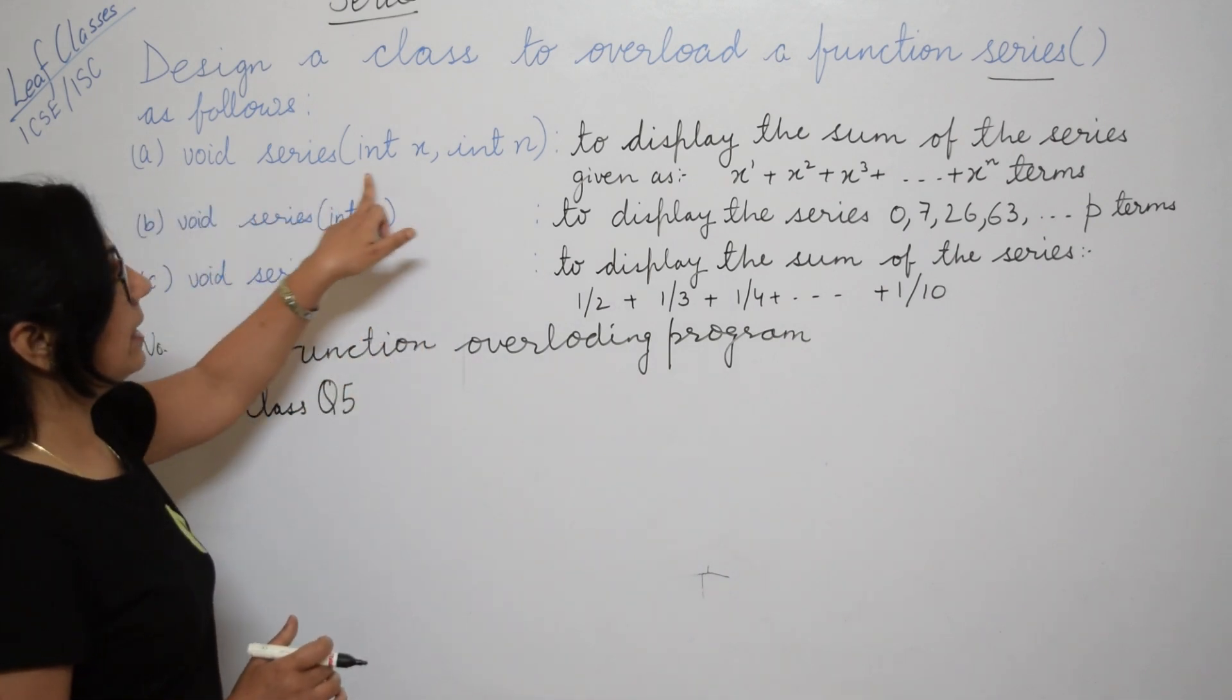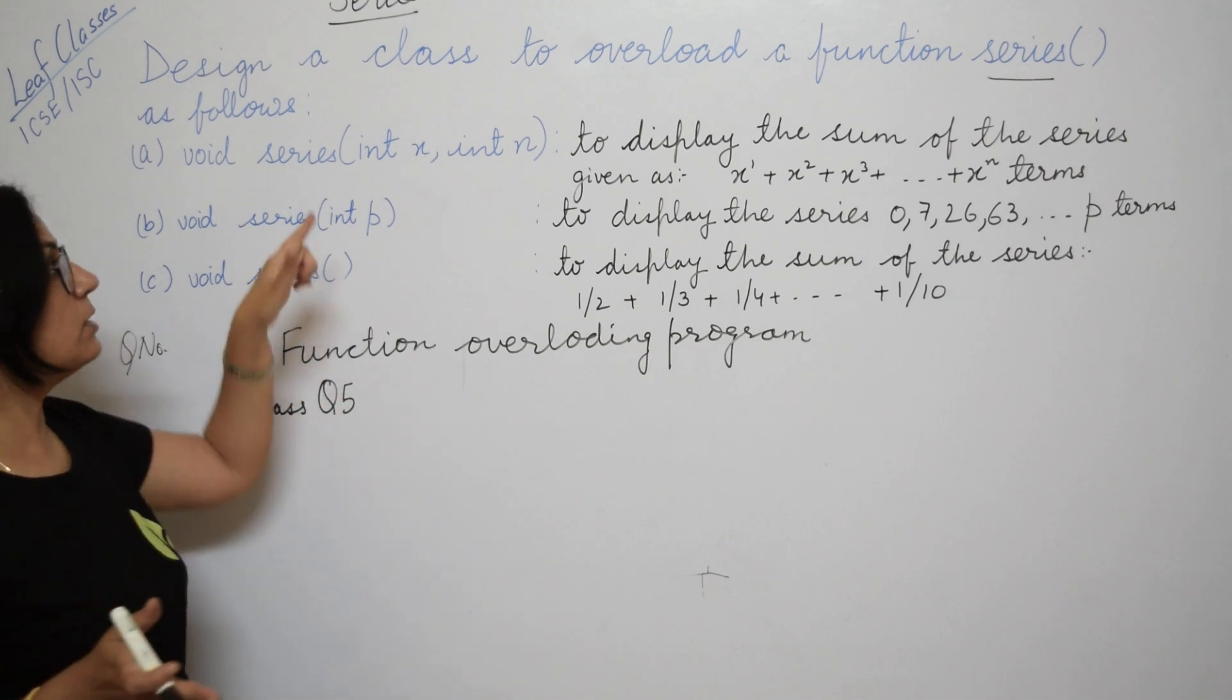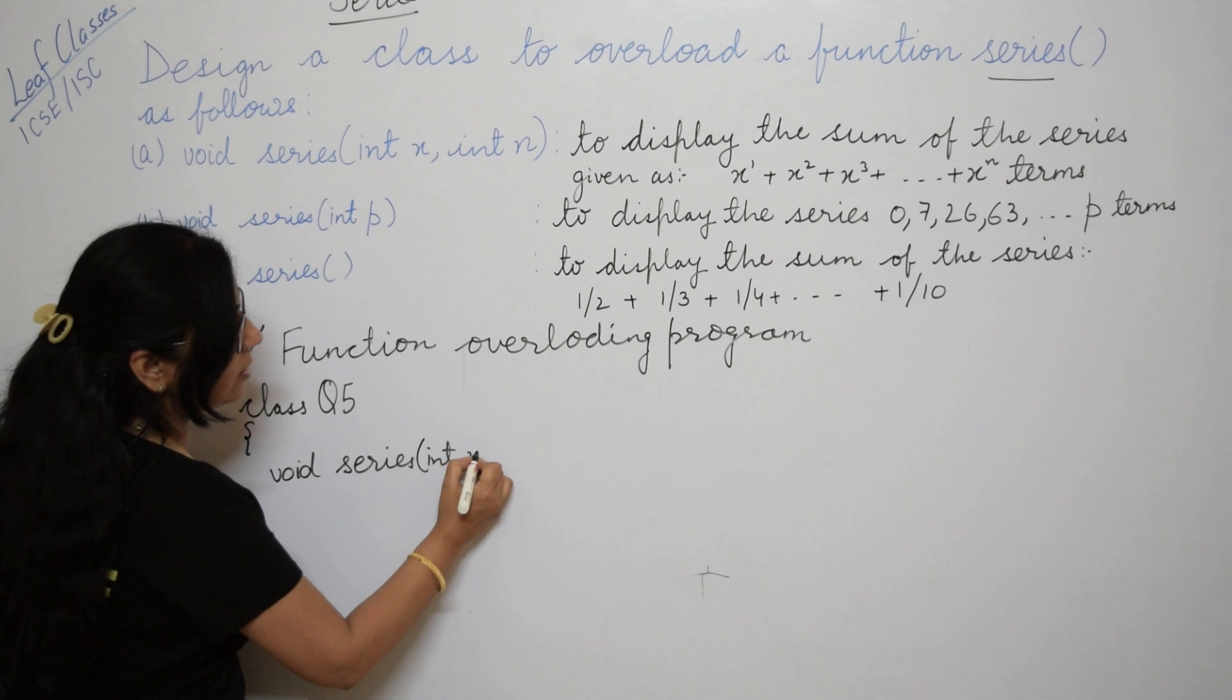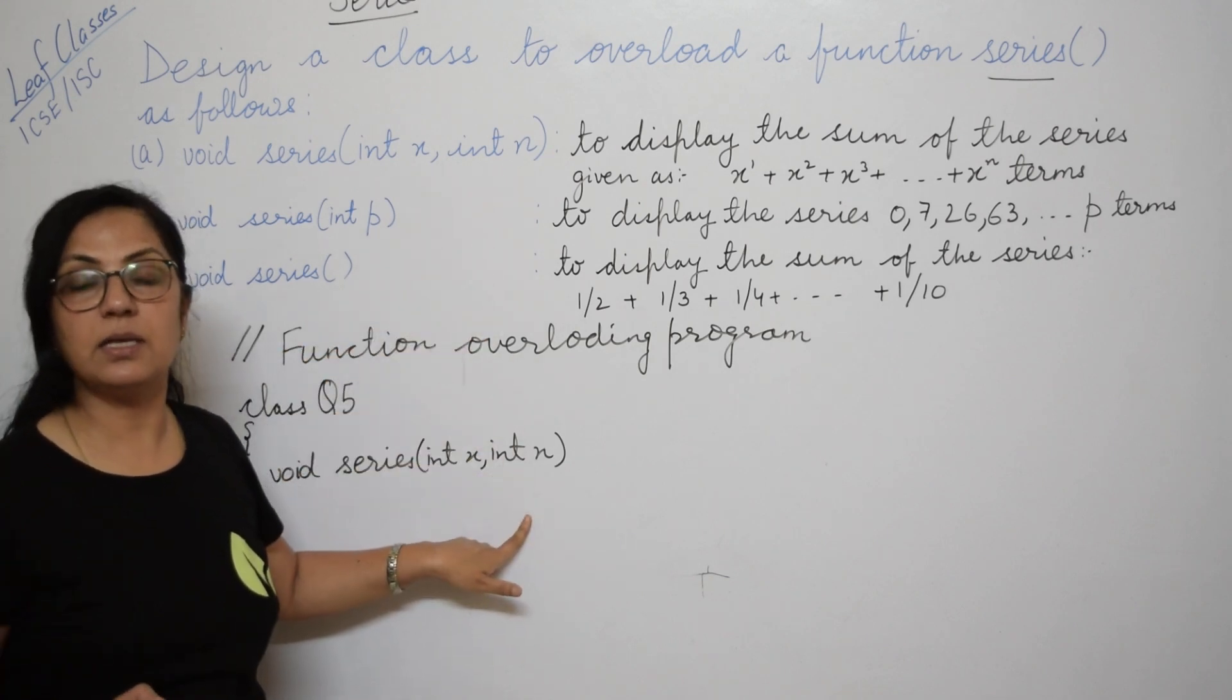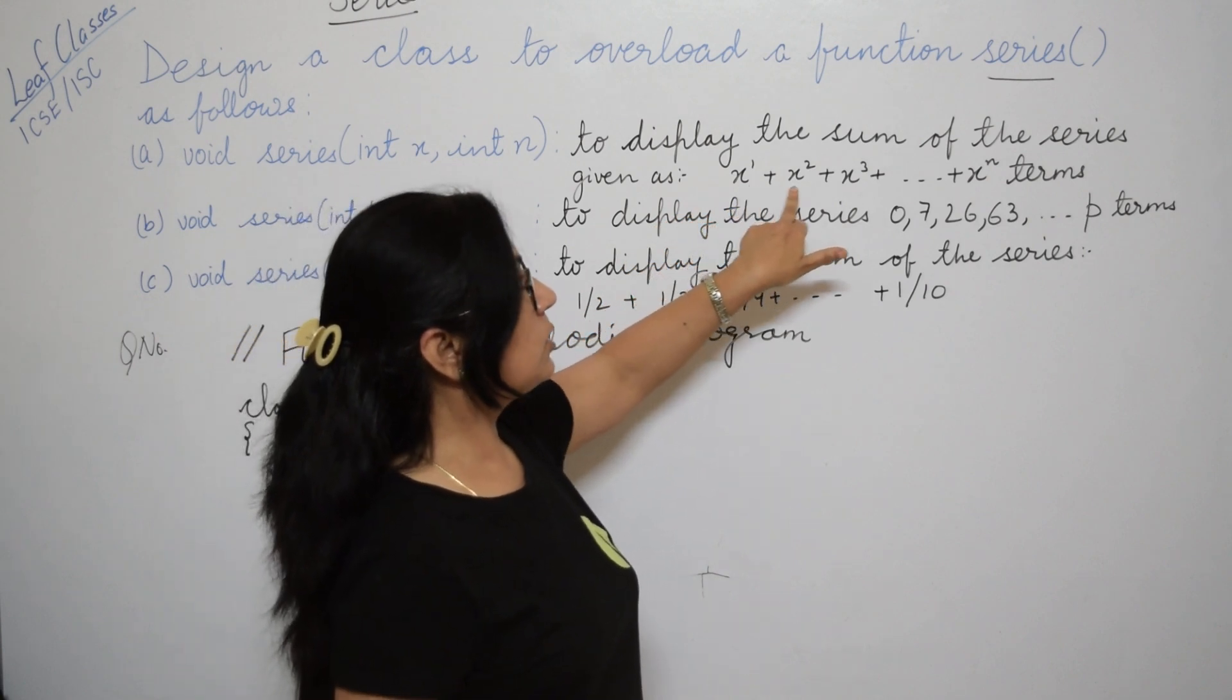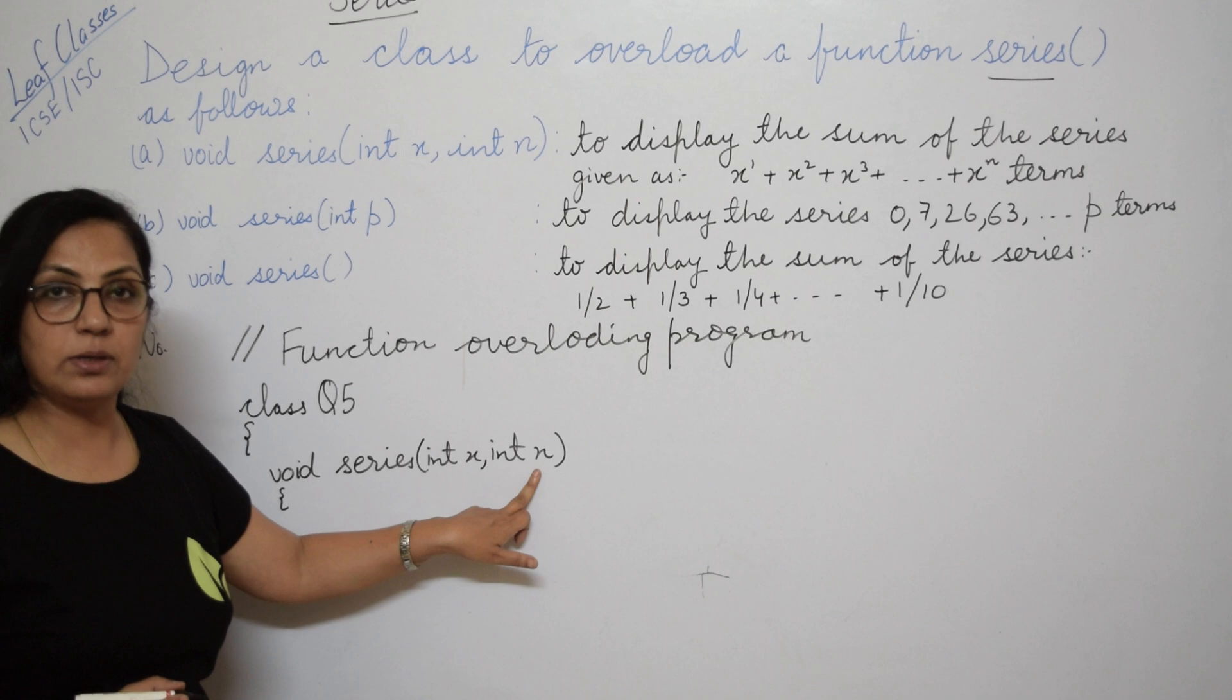The first function says void series int x, int n. Here we have to start the function definitions - three function definitions of series. First we will write void series int x comma int n. Children, please don't change the variable names. If any variable name is given in the question, like x, then write x. It is mentioned to display the sum of the series.